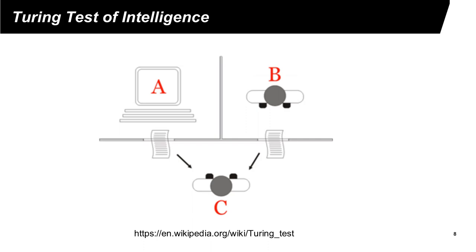If person C is unable to determine whether A or B is a machine or a human, then we will consider machine A as intelligent. This definition has some advantages. First, it gets out of the philosophical discussion about intelligence and instead focuses on the interaction and operation. The definition is broad because it does not restrict the interactions — C may ask many different types of questions, including questions that may involve feelings and emotion, and the questions may occur in different formats such as text or voice.